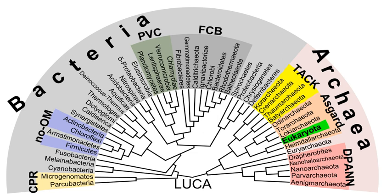Bacteria and archaea reproduce through asexual reproduction, usually by binary fission. Genetic exchange and recombination still occur, but this is a form of horizontal gene transfer and is not a replicative process, simply involving the transference of DNA between two cells, as in bacterial conjugation. DNA transfer between prokaryotic cells occurs in bacteria and archaea, although it has been mainly studied in bacteria. In bacteria, gene transfer occurs by three processes: bacterial virus-mediated transduction, plasmid-mediated conjugation, and natural transformation.